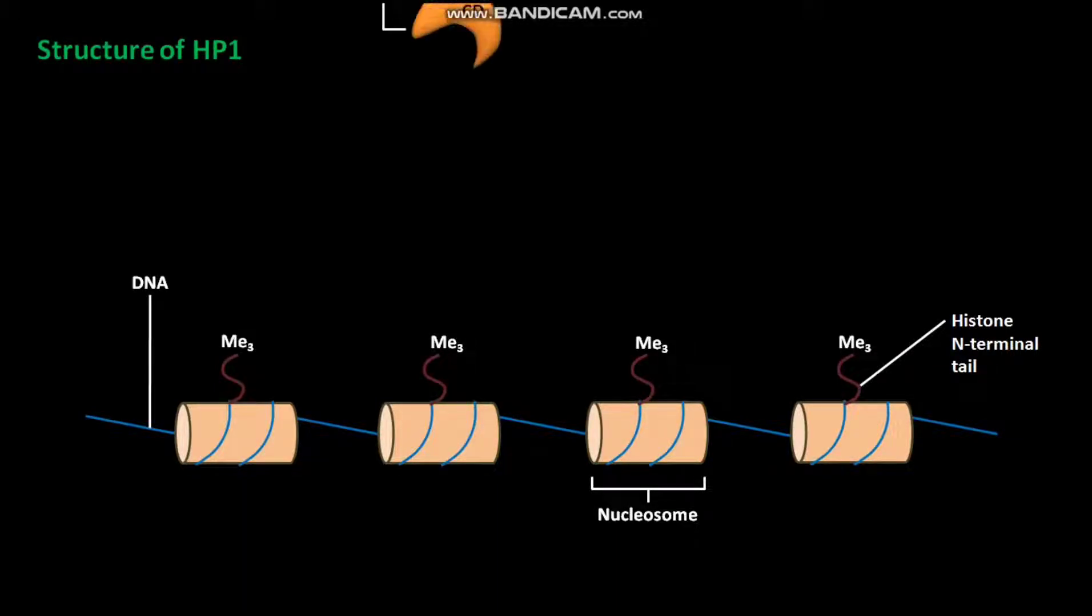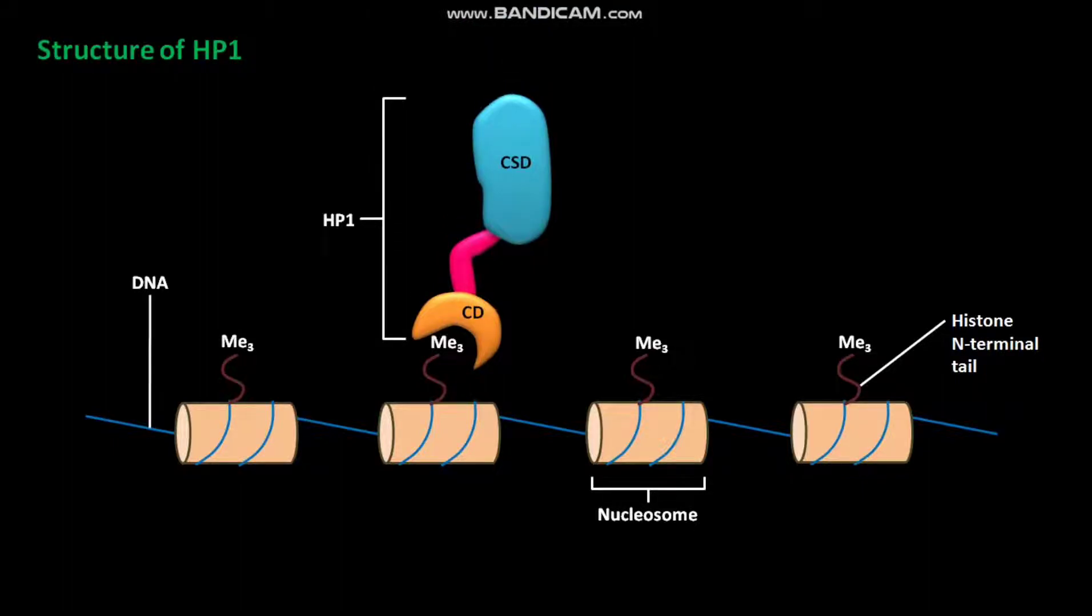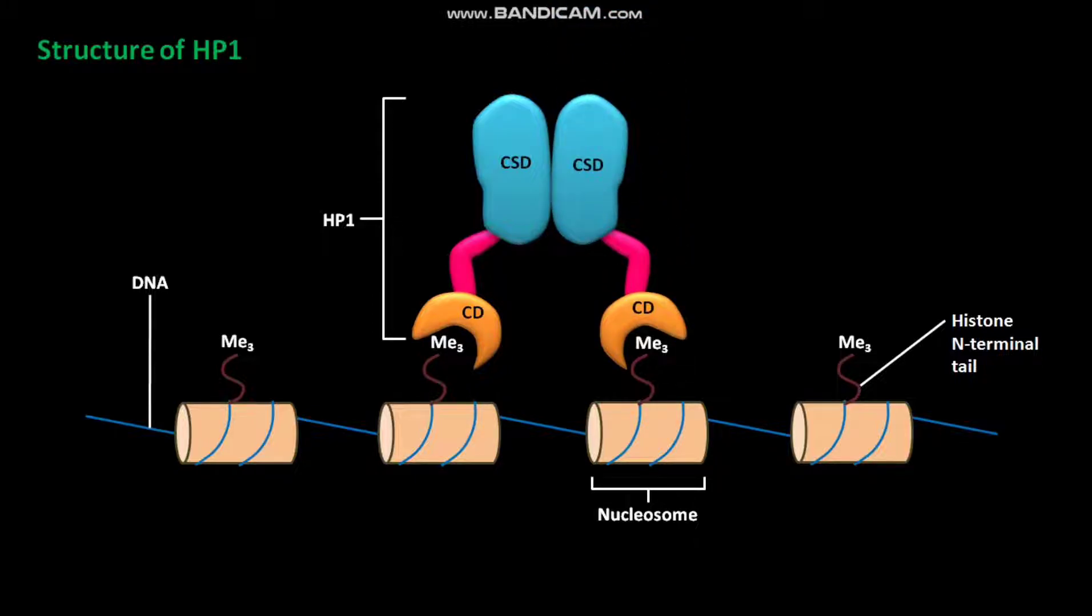The HP1 has a chromodomain or CD and a chromo shadow domain or CSD. The chromodomain of HP1 binds to the trimethylated lysine-9 of N-terminal tails of histone H3. The chromo shadow domain or CSD of HP1 binds to the CSD of another HP1.